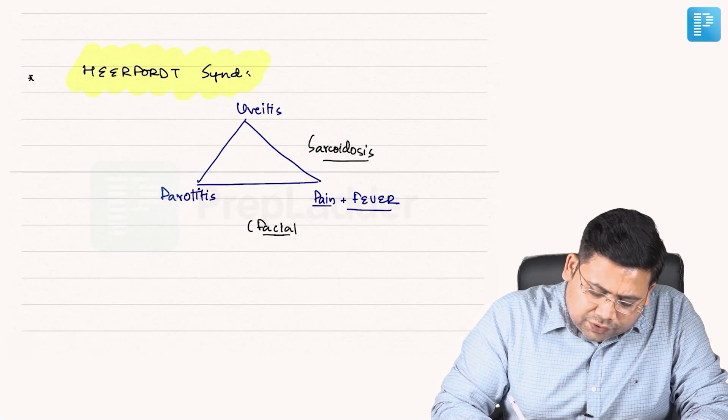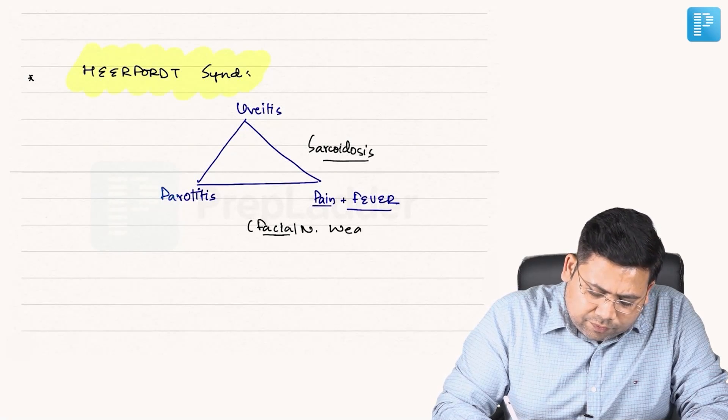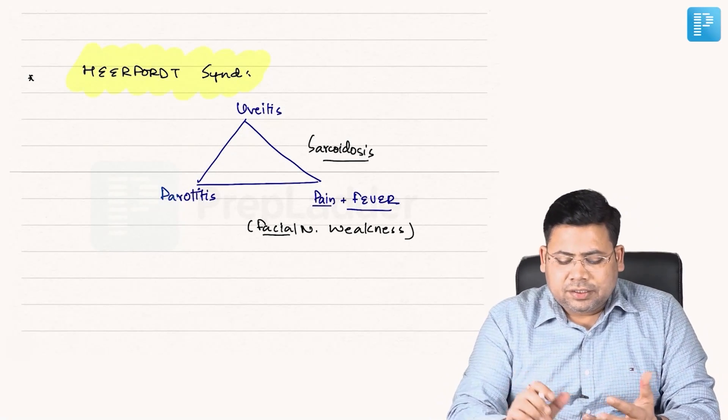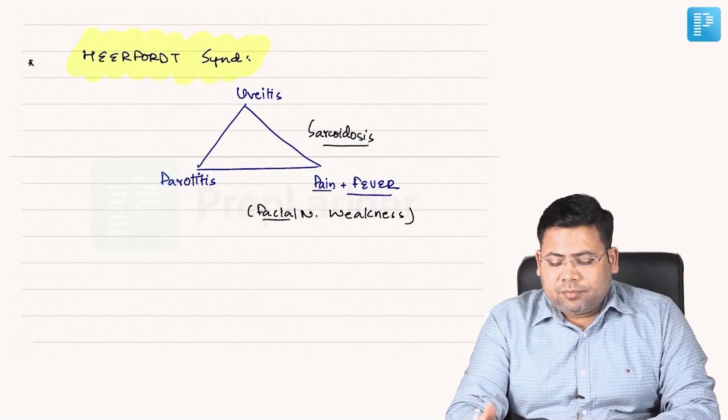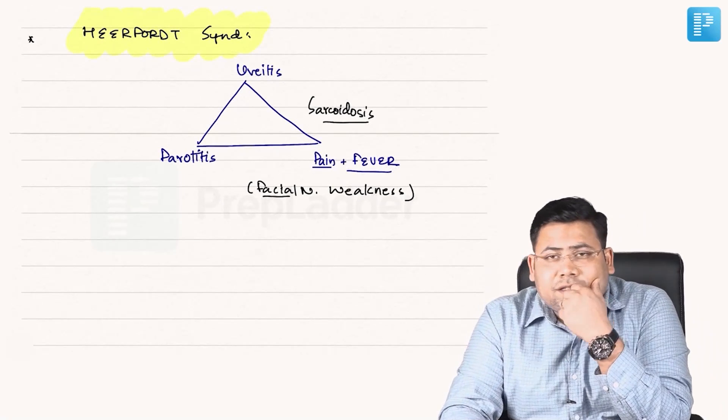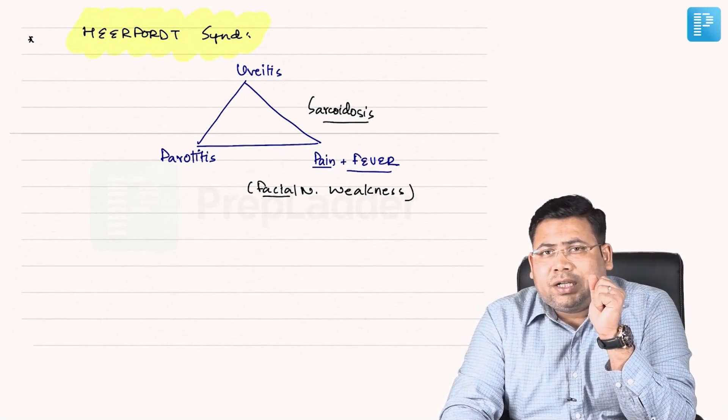Along with that you get to see facial nerve weakness also. Facial nerve weakness may be seen. So facial nerve weakness, uveitis, parotitis, pain and fever. Then we have one more thing, Löfgren syndrome, but there the parotid involvement is not there in sarcoidosis.